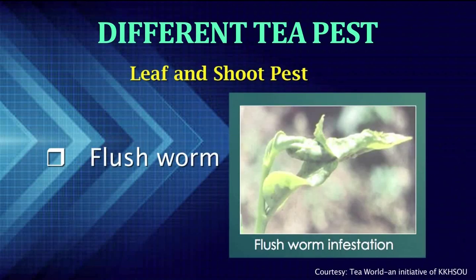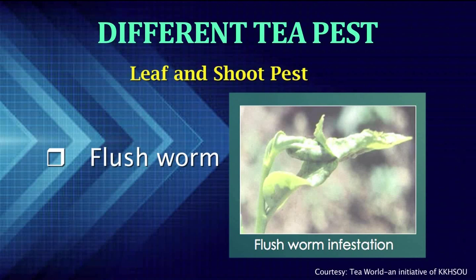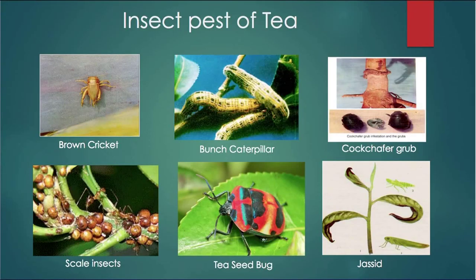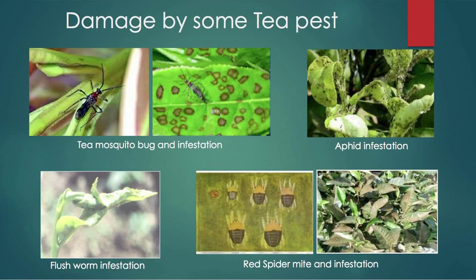The flushworm: the larva of flushworm attacks a few top leaves, tying them together. Then, scale insects and mealybugs. This type of pest are basically sucking pests which attack the foliage, stem and roots of the tea bushes. These are the leaf and shoot pests of tea.